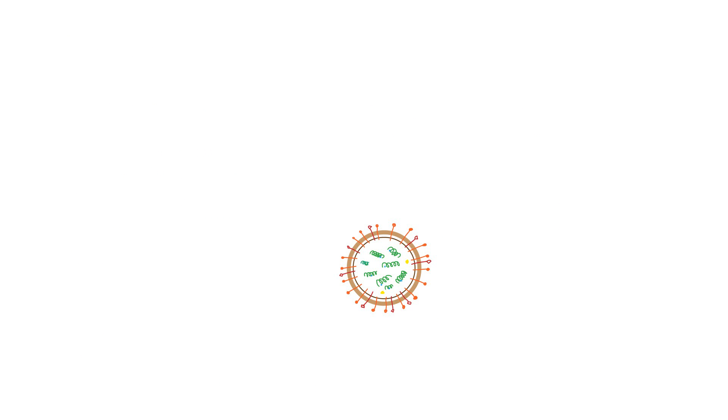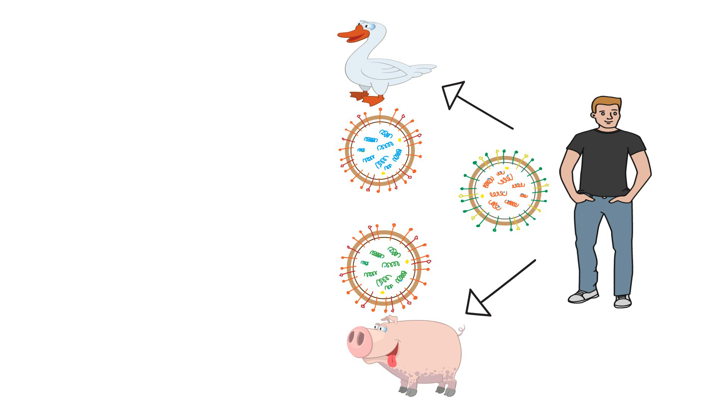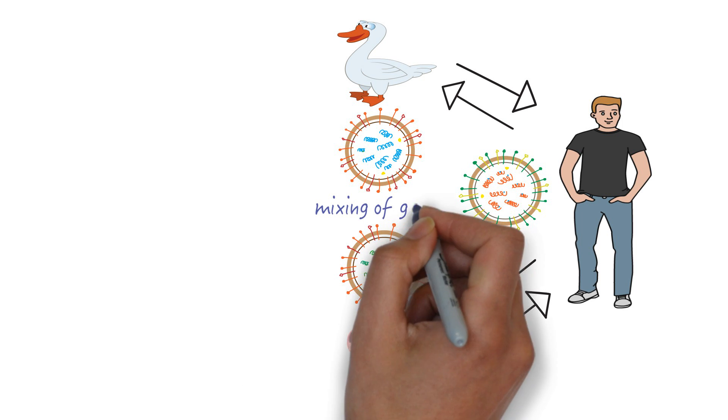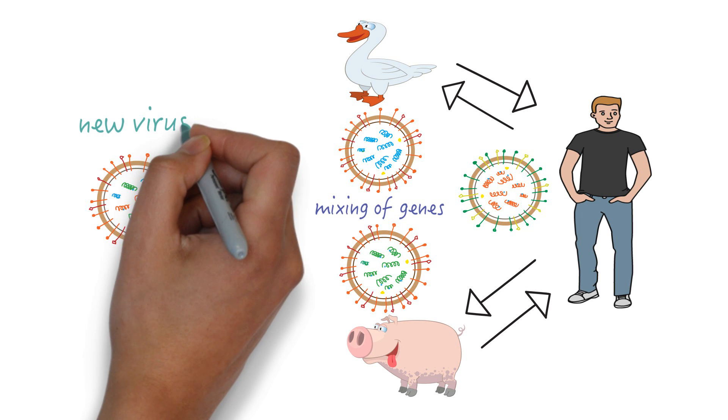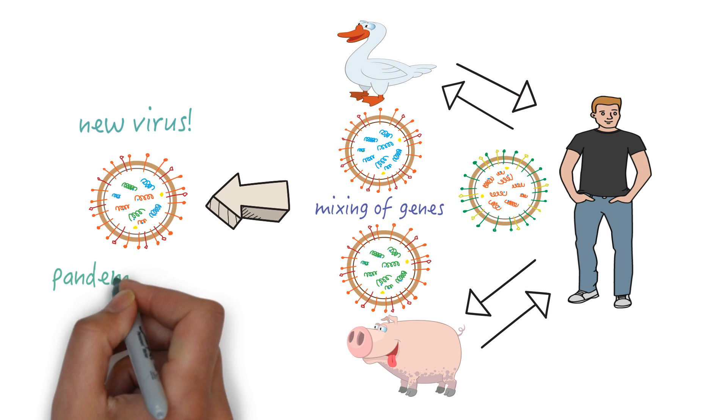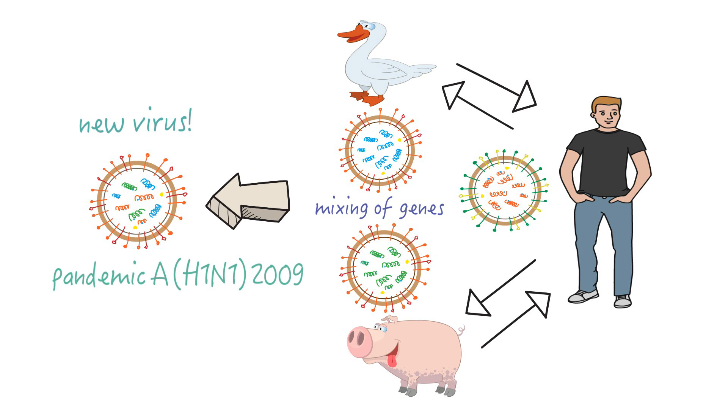It gets more complicated. The influenza virus can infect other animals and sometimes humans can infect animals and animals can infect humans as well. All this can lead to mixing of the virus genes and the creation of all sorts of new virus types with bits of genes from different sources. For example, the 2009 pandemic virus is a mix of pig, bird and human genes.